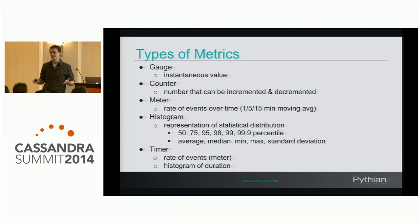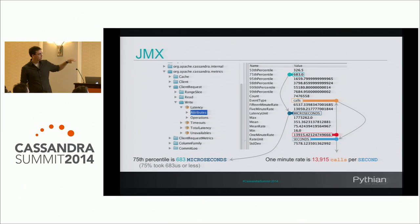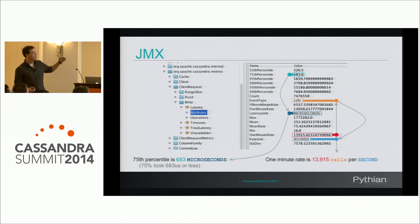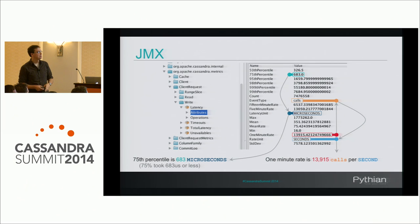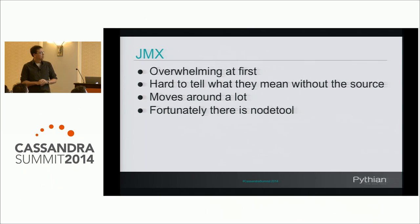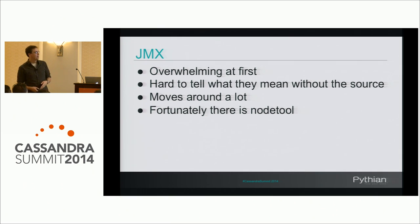Here's an example inside JConsole: a histogram of write requests from the coordinator perspective. One nice thing is that this includes the units, so I can read that the 75th percentile is 683 microseconds — meaning 75% took 683 microseconds or less. Similarly on the meter side, there have been 13,000 calls per second. This can be a little overwhelming — there are lots of attributes, lots of operations, and there isn't really any documentation explaining them. You have to go to the source code, and even then between versions they move, change, and get renamed.